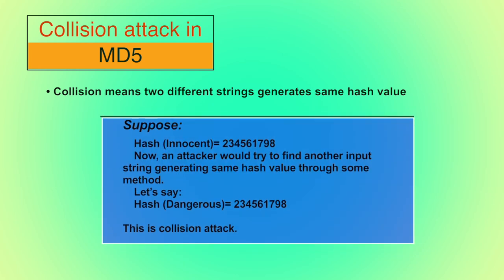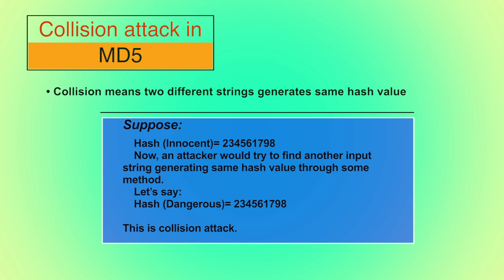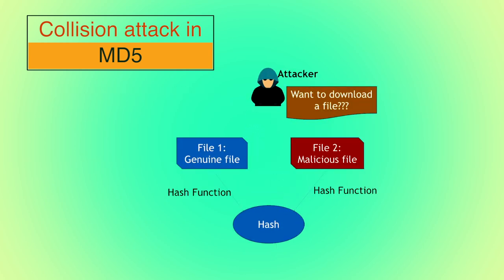A collision attack in MD5 means finding two different input strings of a hash function that produce the same hash value. For example, if 'innocent' computes to hash value 234561798, an attacker using brute force finds another string 'dangerous' that produces the same hash 234561798 — this is a collision attack. In simple words, an attacker could offer a file download with a shown hash to prove integrity, then switch out the file for a different one with the same hash, and the downloader would be unable to know the difference.